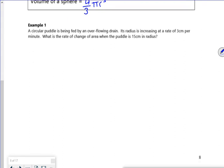So it says here, a circular puddle. So with these, you always want to work out what you've got, and then what you need, and then how do you get there. So a circular puddle is being fed by an overflowing drain. The radius is increasing at a rate of 3 centimeters per minute. So just looking at that wording, the radius is increasing. So there's a change in the radius. So that's dr.